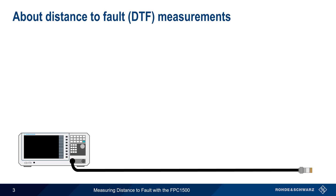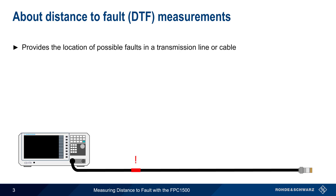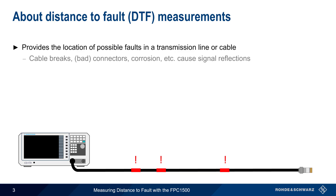Let's start with a brief overview. Distance to fault measurements provide the location of possible faults in a transmission line or cable. These can be due to cable breaks, bad connectors, corrosion, animal chews, etc. Signal reflections will occur wherever these faults are located.